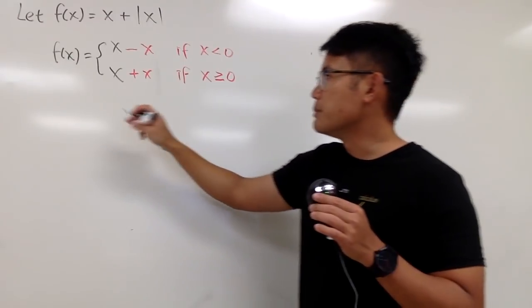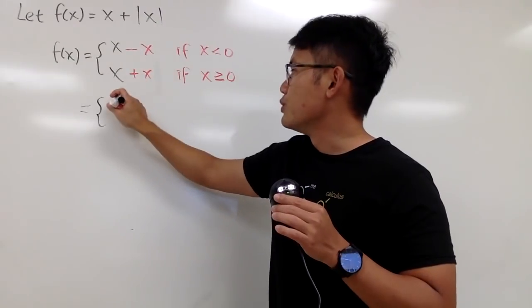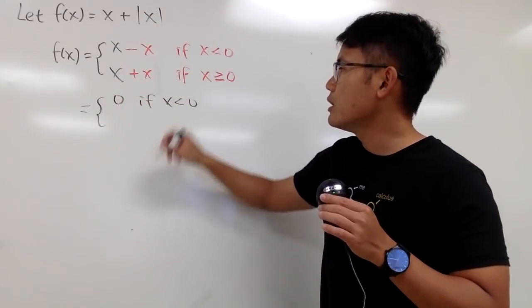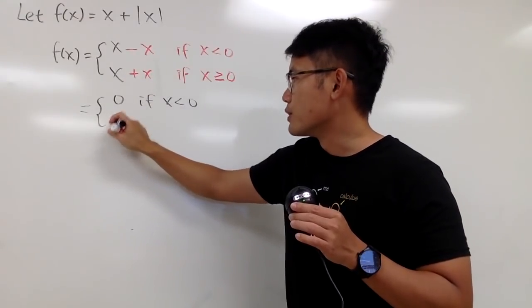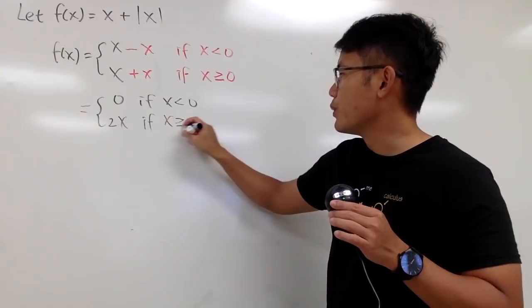And of course, we can simplify this a little bit. This is equal to x minus x, which is 0, and this is true if x is less than 0. And x plus x is, of course, 2x, and this is true if x is greater than or equal to 0.